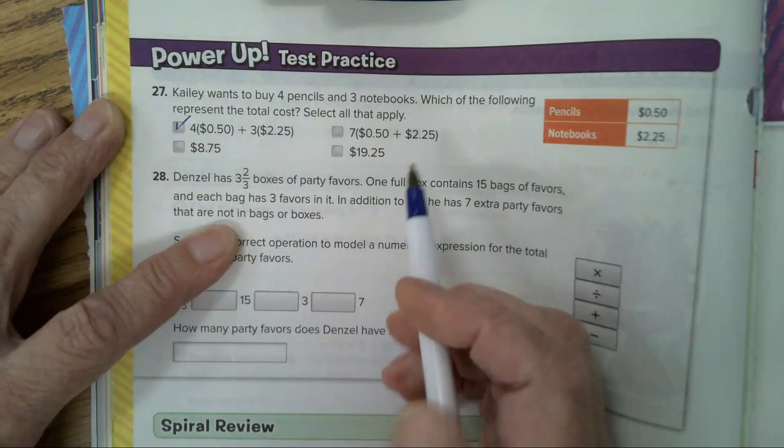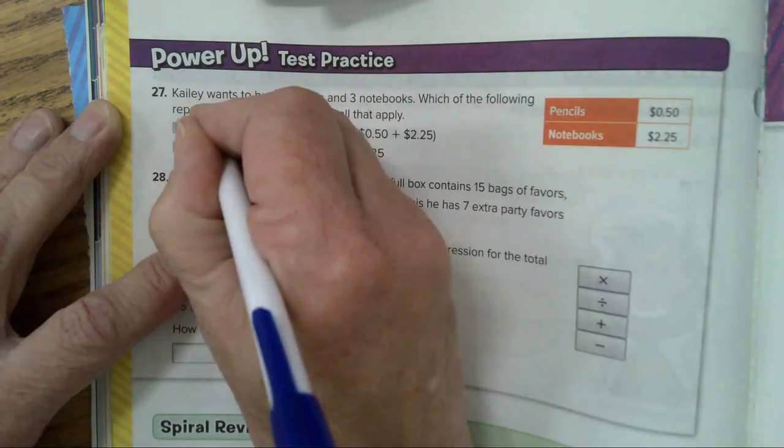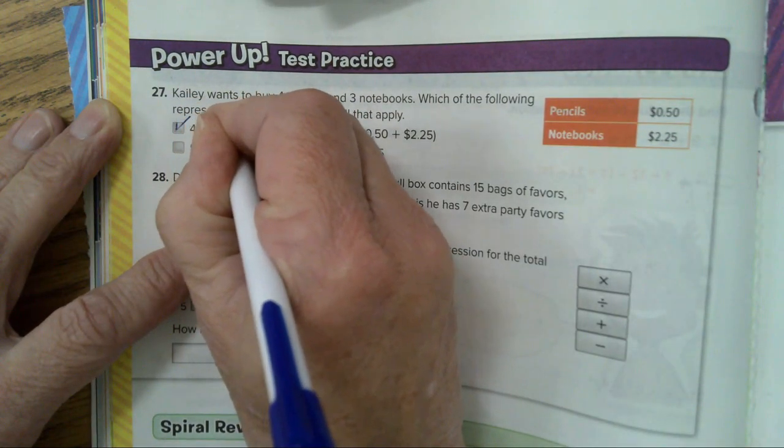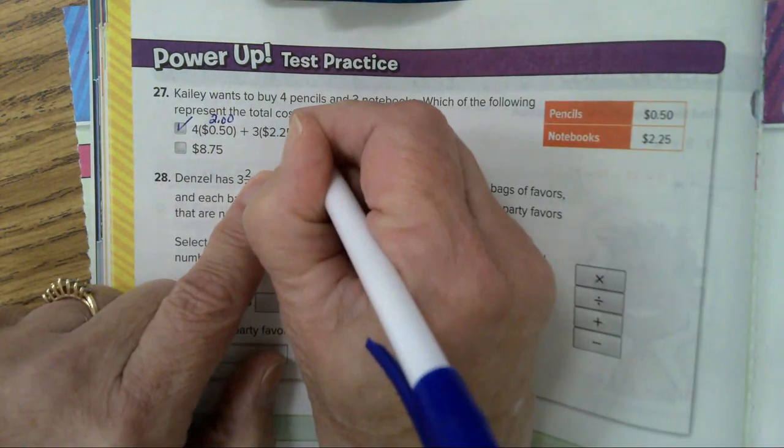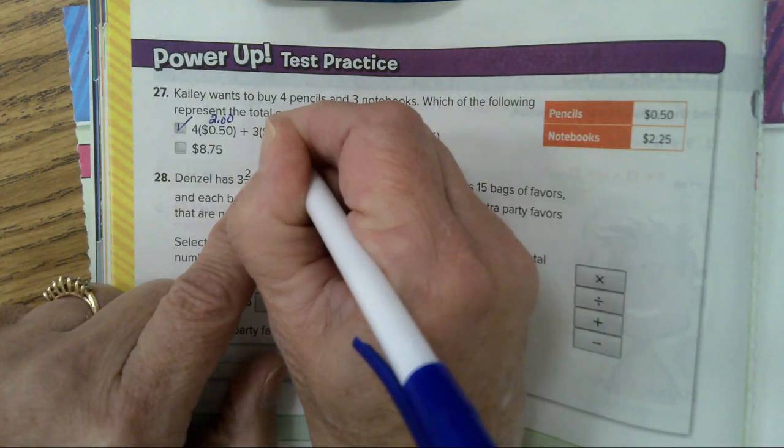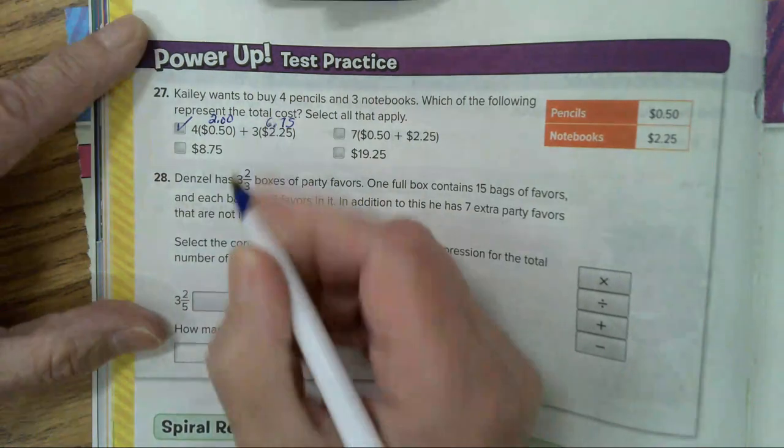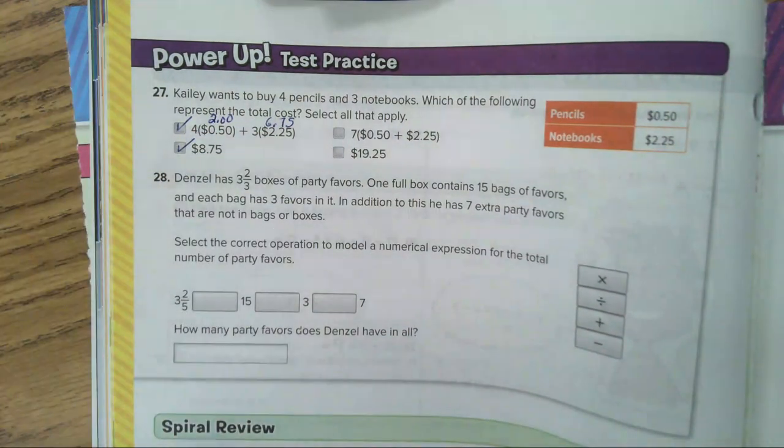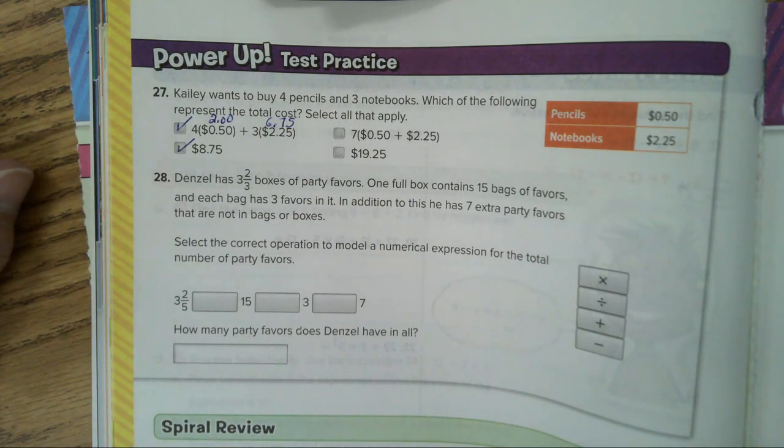Now 4 times 50 cents, that would be $2. And 3 times 225, 5, 6, 7... 6.75. So when you add $2 plus $6.75 you will also check $8.75. So for number 27 you should have these two boxes checked.